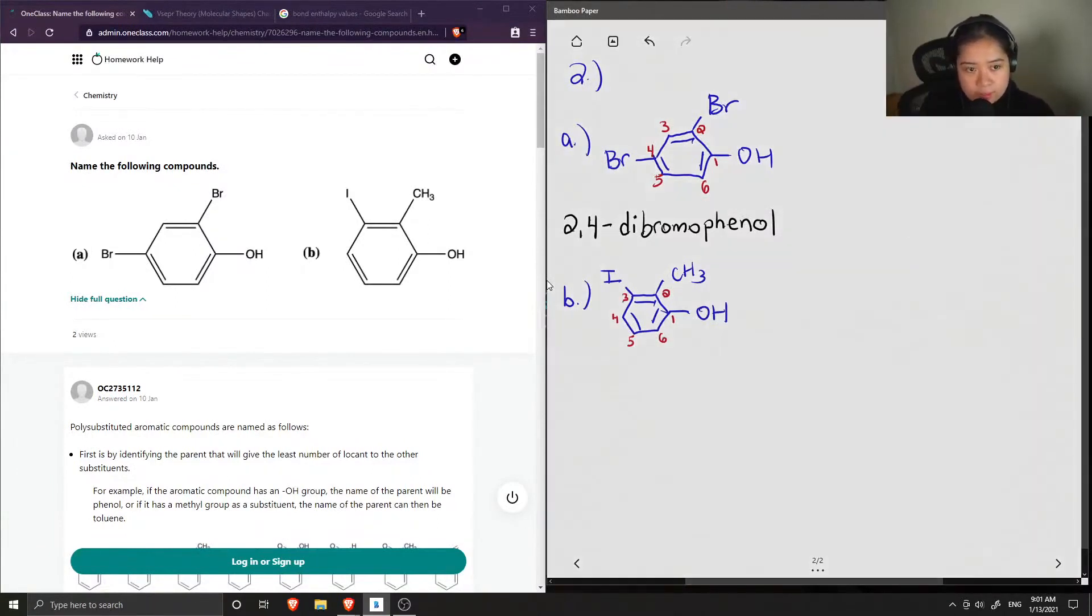we are going to specify which carbon all of the other substituents are on. So this is an iodo group and this group is called a methyl group. So if we were to do it in alphabetical order, the iodine group would be named first. So on carbon 3, we have our iodine group, so 3-iodo.